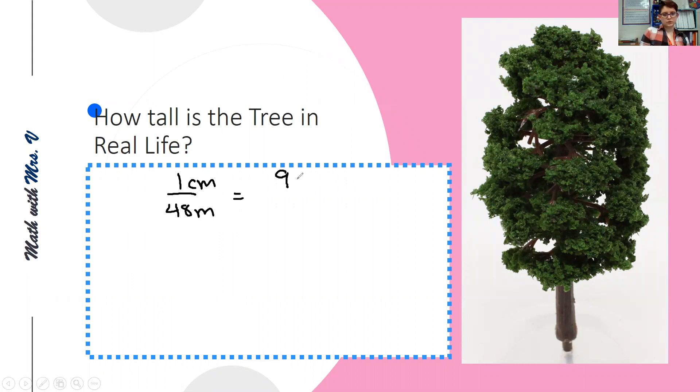Since we know that this tree is nine centimeters tall, we can use a proportion to determine how tall it would be in real life. We're going to cross multiply. So we get 1x equals 48 times 9. And we get that the tree in real life is 432 meters tall.